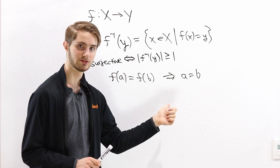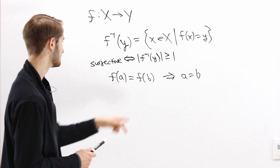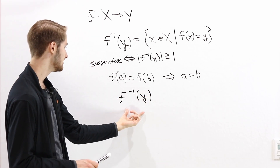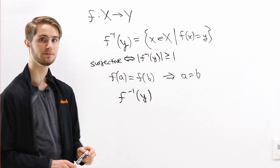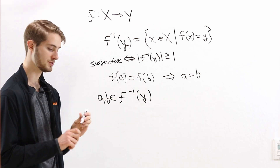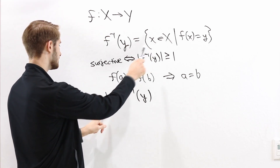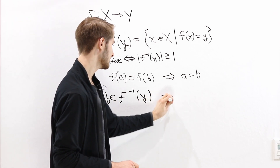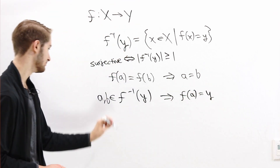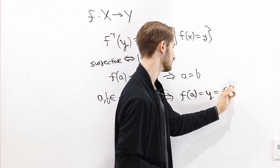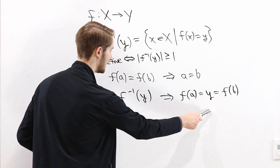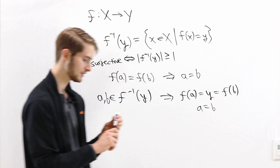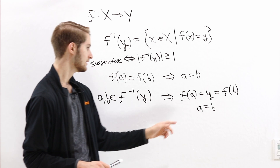Let's think about how we can write this in terms of preimages. Let's say we have some element y of the codomain and we want to look at the preimage f inverse of y. The preimage is the set of all inputs from the domain that map to y. So let's say we have two different inputs a and b that are in the preimage of y. By definition, a is in the preimage means f of a equals y, and b in the preimage means f of b equals y. Because both equal y, we have f of a equals f of b, and since our function is injective, that means a equals b.